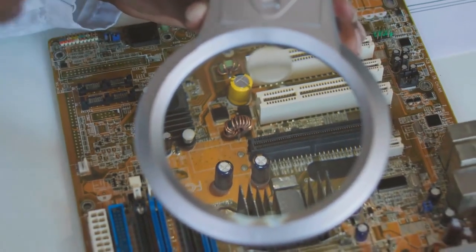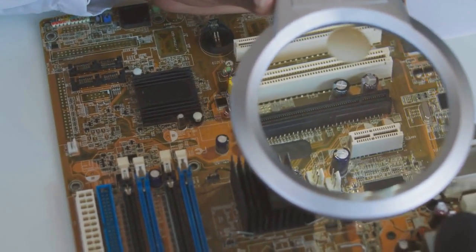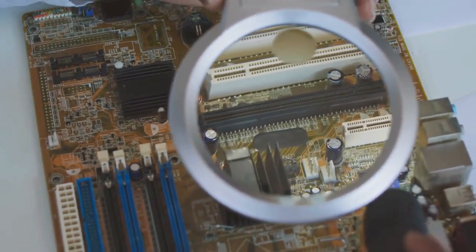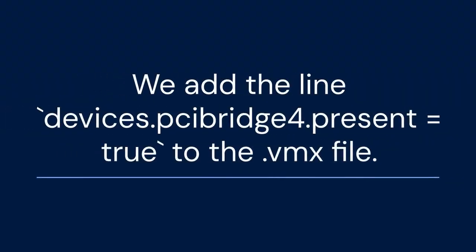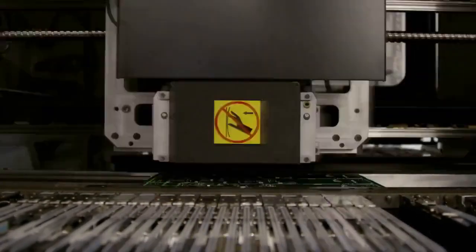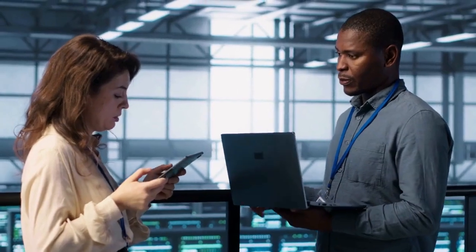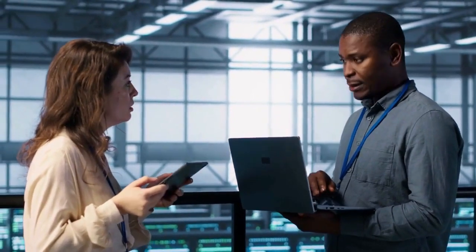Another potential solution involves manually adding the SMBus device to the virtual machine's configuration. This is a more advanced approach. Add the line devices.pcibridge4.present = true to the .vmx file. After adding this line, also add devices.pcibridge4.pci slot number = 36. Remember to save the .vmx file and restart the VM.